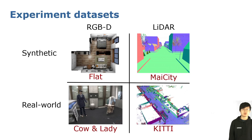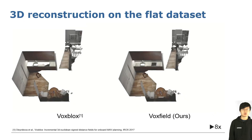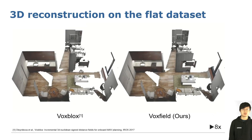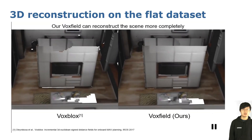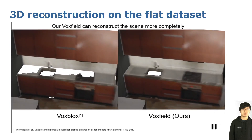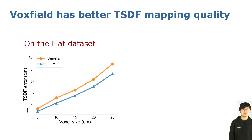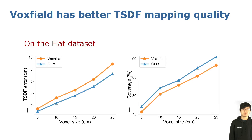To evaluate our method, we use both real-world and synthetic data collected by both RGB-D camera and LiDAR. Taking the flat dataset as an example: regarding 3D reconstruction, Vox Blocks is on the left and our Vox Field is on the right. Vox Field reconstructs the flat scene more completely because the overestimated projective TSDF in Vox Blocks leads to more truncated voxels. In the quantitative results for TSDF mapping, the horizontal axis represents voxel size and the vertical axis represents TSDF error. Our Vox Field in blue achieves lower TSDF error consistently thanks to projective distance correction, and also achieves improvement on reconstruction coverage.